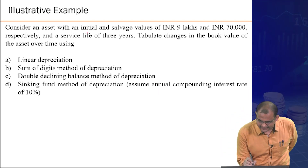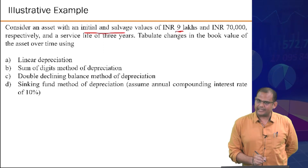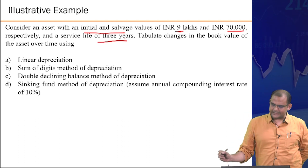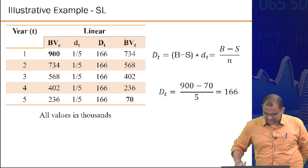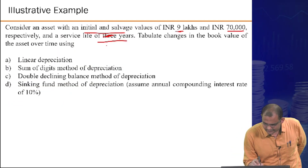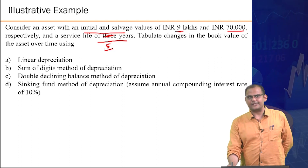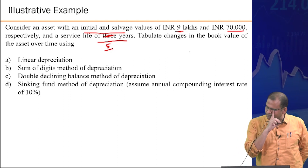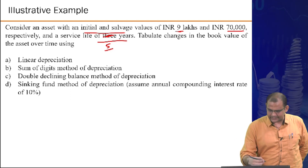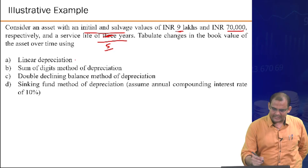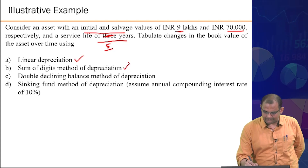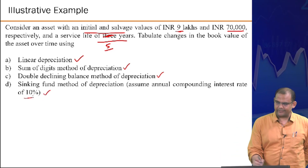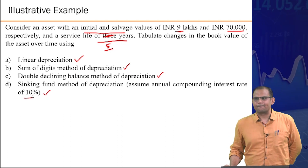Example: an asset with initial value 9 lakhs, salvage value 70,000 rupees, service life 5 years. The task is to plot book values over time using four methods: linear depreciation, sum of digits, double declining balance, and sinking fund. The annual interest rate is 10 percent.